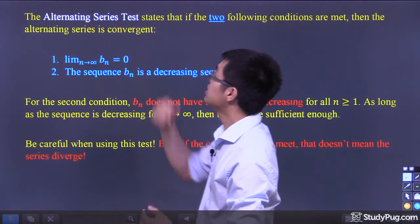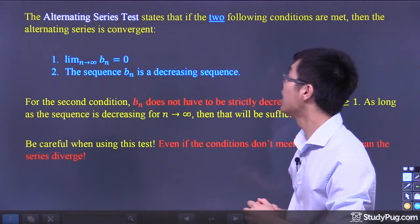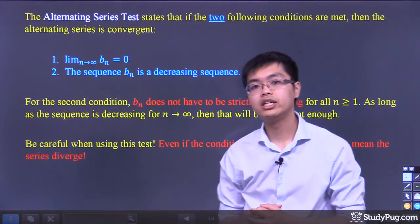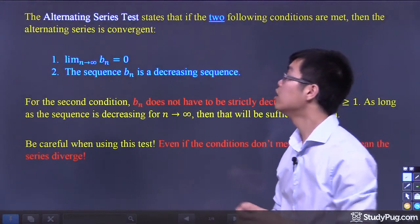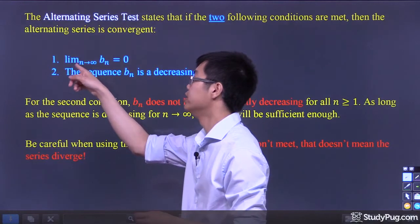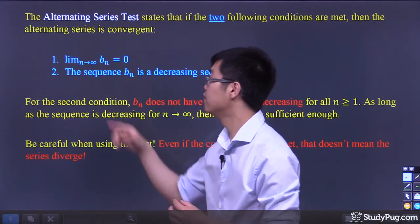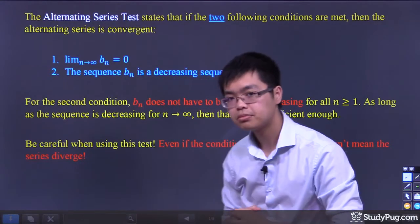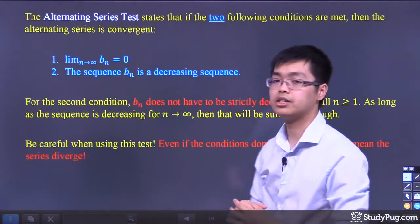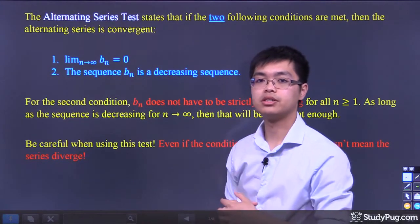The alternating series test states that if the two following conditions are met, then the alternating series is convergent. The first condition is we take the limit as n goes to infinity of b_n, and if this equals zero, then that condition is met. The second condition is the sequence b_n must be a decreasing sequence.